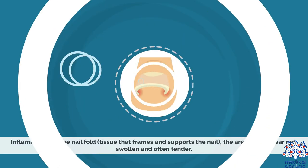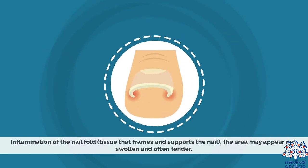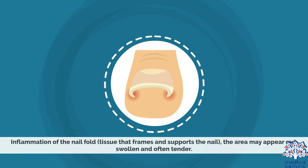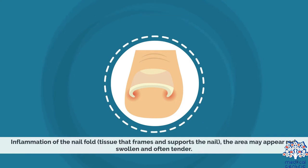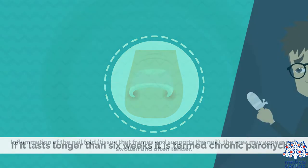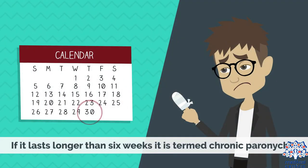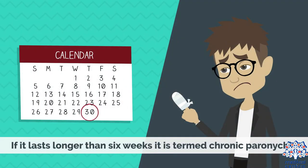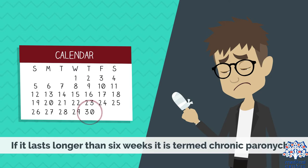Paronychia: inflammation of the nail fold, the tissue that frames and supports the nail. The area may appear red, swollen, and often tender. If it lasts longer than six weeks, it is termed chronic paronychia.